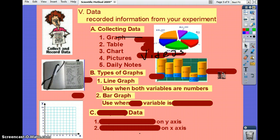You use a line graph when both variables are numbers. So, it doesn't have to be over time. Time is obviously a big factor in experimenting. So, if the variable is a number and time is part of it, you're going to use a line graph. You use a bar graph when one variable is a number and the other is not. Like what?